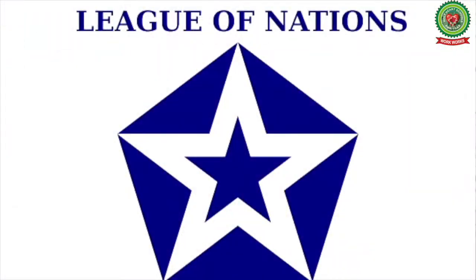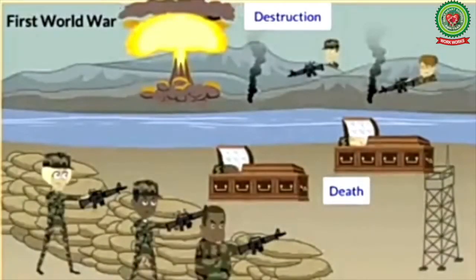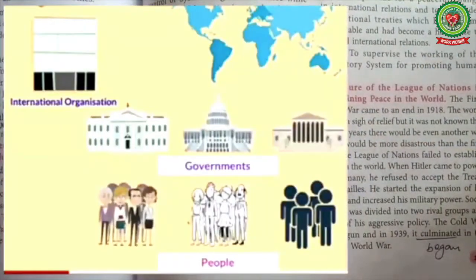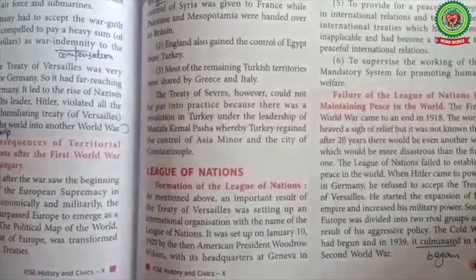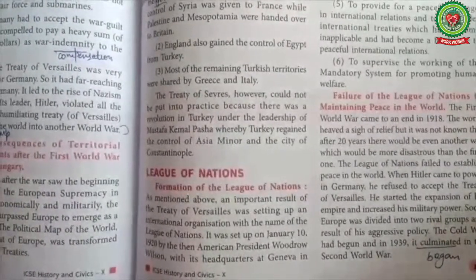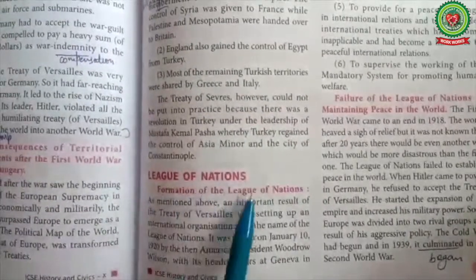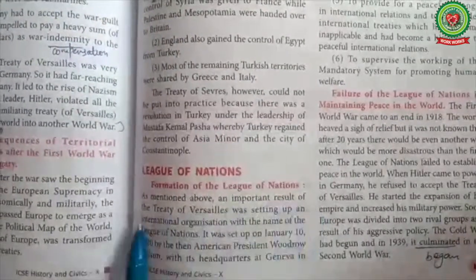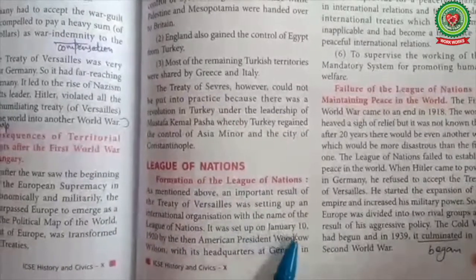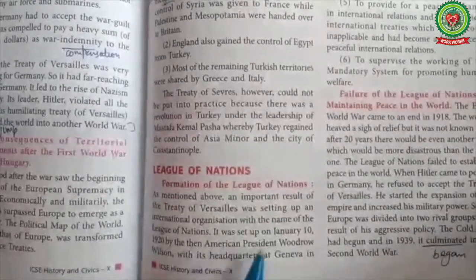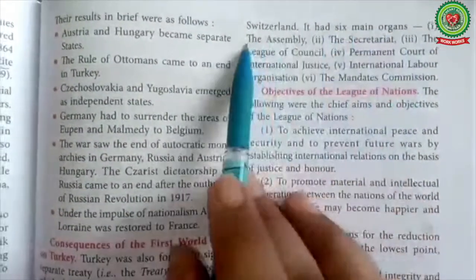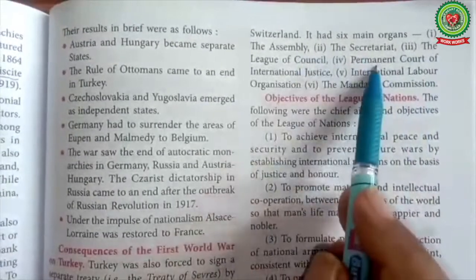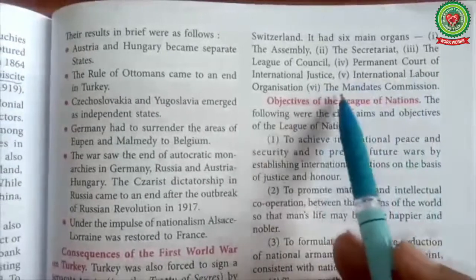League of Nations: The First World War brought death and destruction all over the world. The peoples and governments of the world began to think about forming an international organization to prevent future wars. Accordingly, conferences and discussions were organized. An important result of the Treaty of Versailles was setting up an international organization — the League of Nations. It was set up on January 10, 1920, by American President Woodrow Wilson, with its headquarters at Geneva in Switzerland. It had six main organs: the Assembly, the Secretariat, the League Council, the Permanent Court of International Justice, the International Labour Organization, and the Mandates Commission.